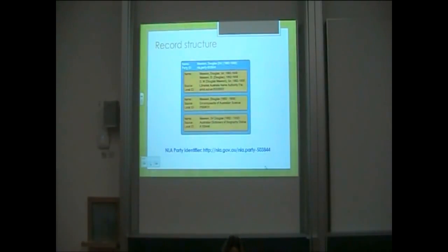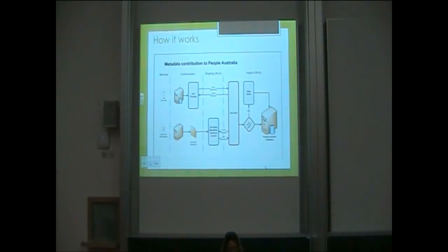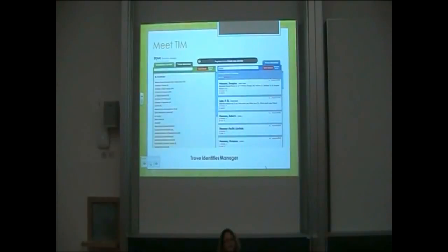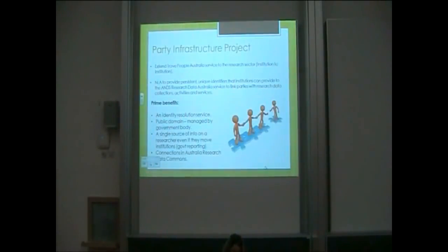Under the record structure — this is an example — you have one NLA party identifier, and underneath that you have records from contributing organisations, each with their own local IDs. So it acts as an identity resolution service and co-locates those records. The workflow involves OAI-PMH harvesting of records into the National Library, then an automatic matching process to see whether incoming records match anything in the party infrastructure. If they do, the record automatically gets assigned the NLA persistent identifier; if it doesn't, it goes to TIM — the Trove Identities Manager — an online system where people can manage their records and create new identities. It's a tool for dissemination so that you get just one persistent identifier per person or organisation record.